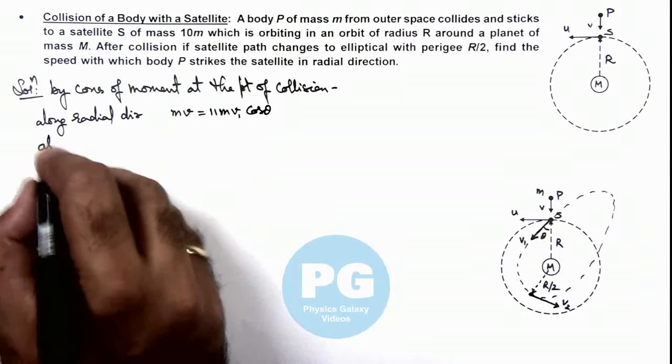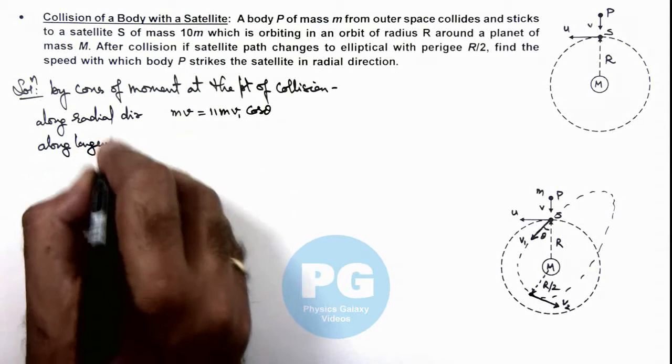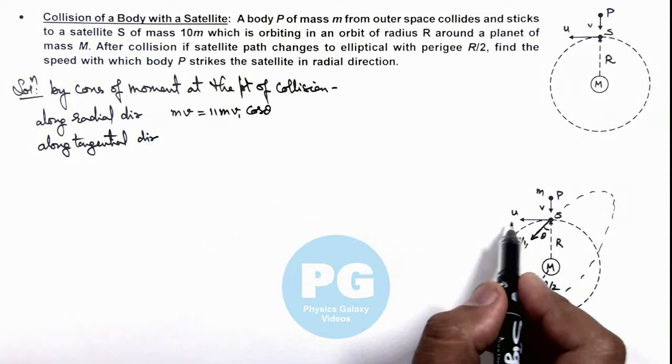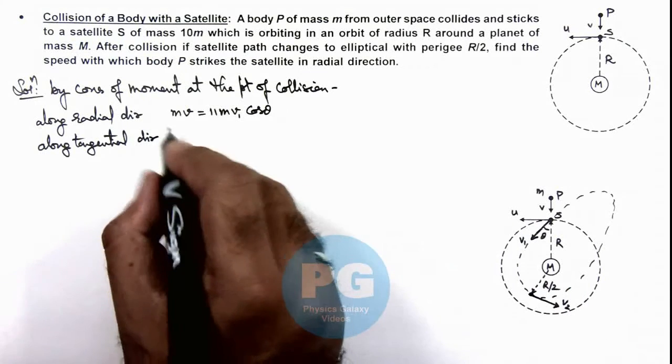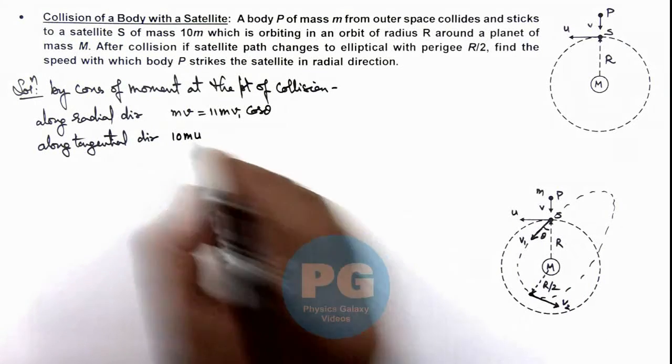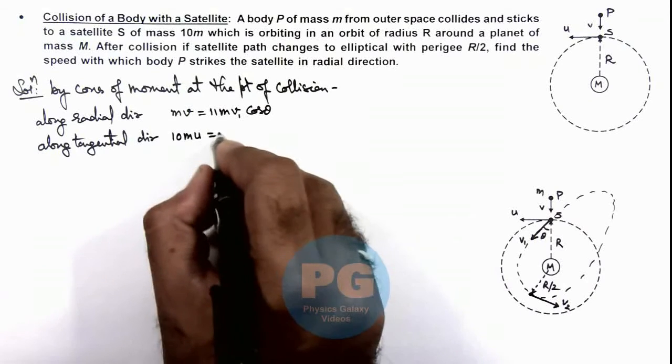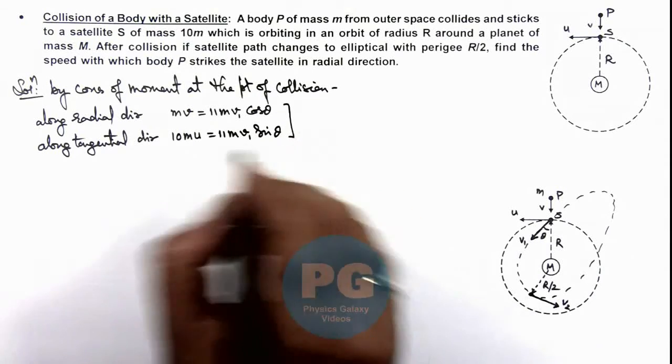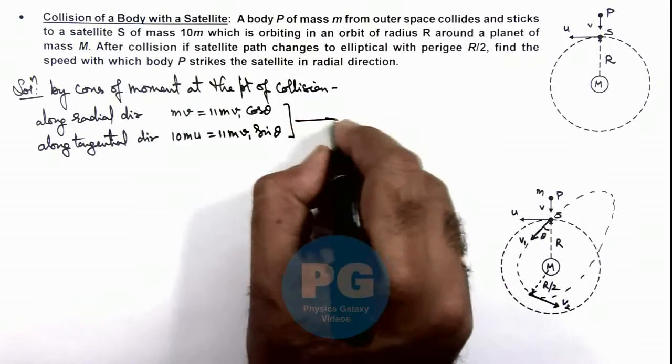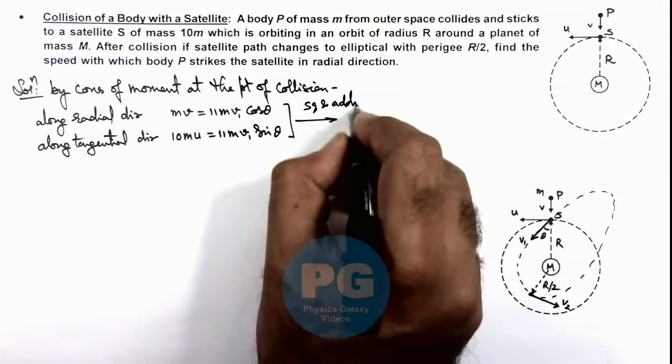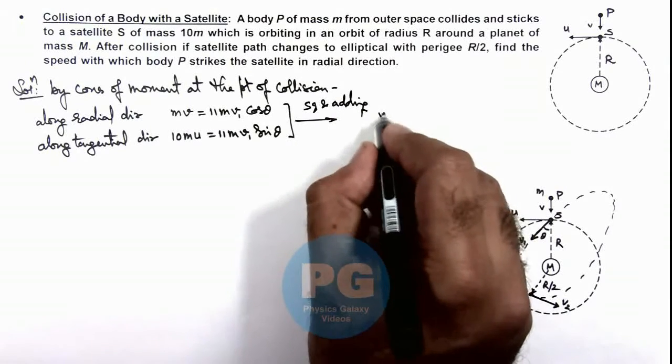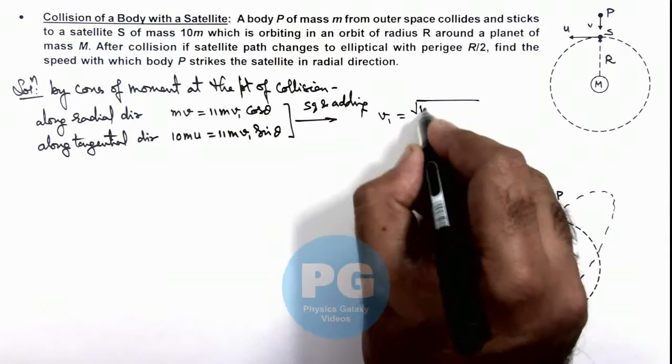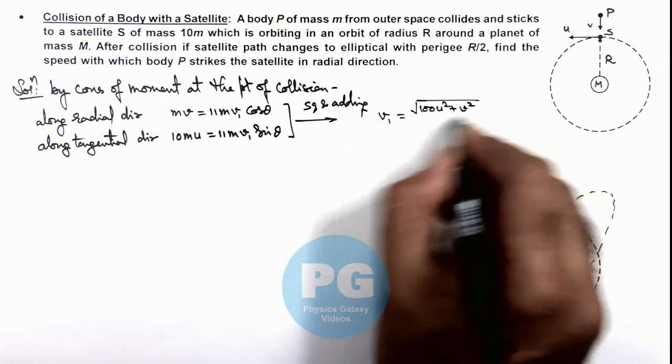And similarly along tangential direction, if we have a look, you can see along tangential direction the momentum of satellite before collision was 10mu. u was the orbital speed of satellite, and that is equal to 11m v1 sine theta. And from this relation if we square and add, this will result as the value of v1 which is equal to the square root of 100u squared plus v squared divided by 11.